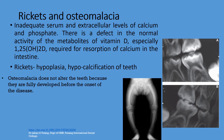Here are some examples of the rickets appearance of the teeth, which are very hollow — they look like shells — because of the hypocalcification of the teeth. Also visible is the bending of the bones, which can be seen in a child who has rickets.